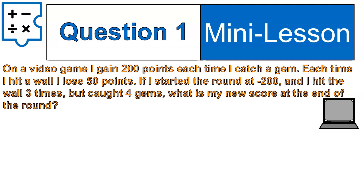All right, we're back. I wonder which method you used. There are several different methods. You could use repeated addition, where you would add plus 200 every time you caught a gem, and then subtract 50 every time you hit a wall. Or we could do what I'm going to show you here. The first step is I'm going to show you how I solve word problems — I will circle some important pieces of information.